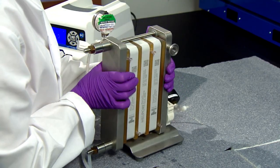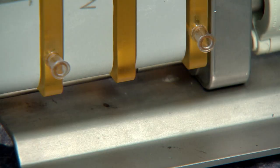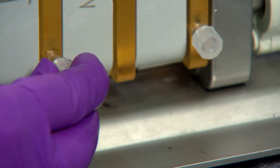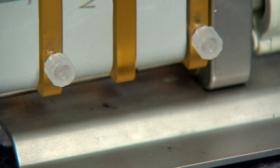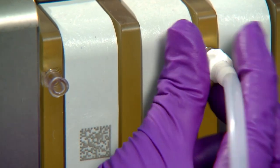Turning the holder around, you will do as you had for the front by capping off the retentate ports, now located at the bottom, and connecting permeate collection tubes to each permeate line.